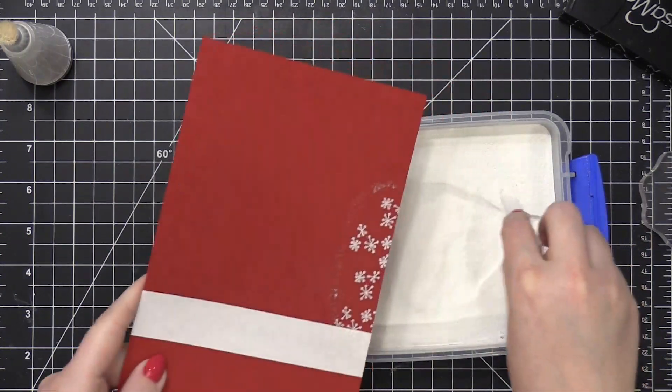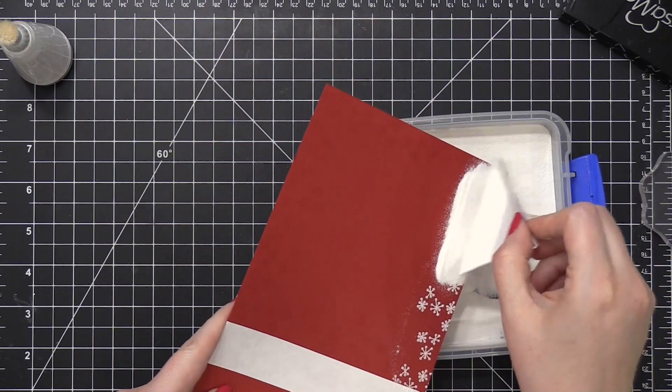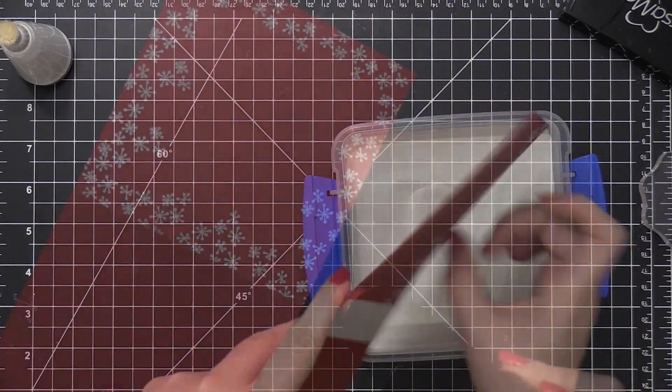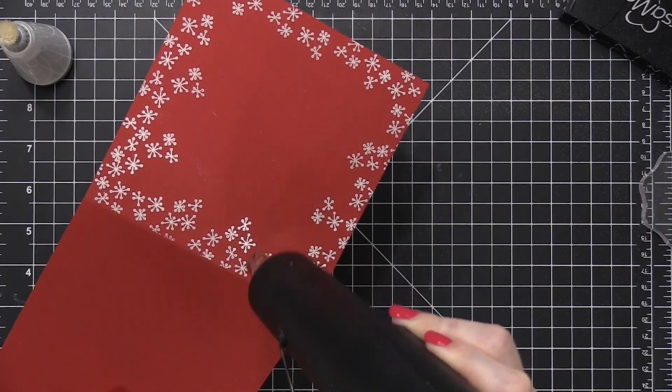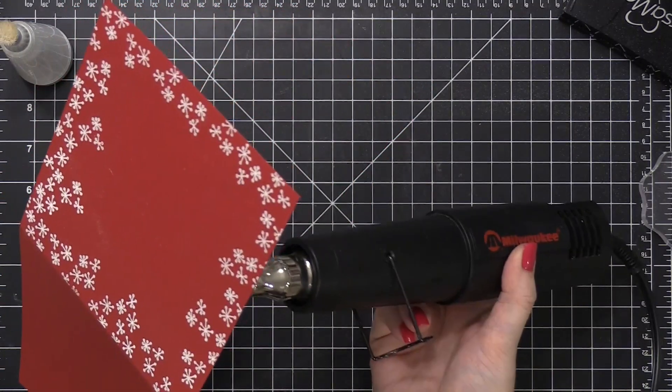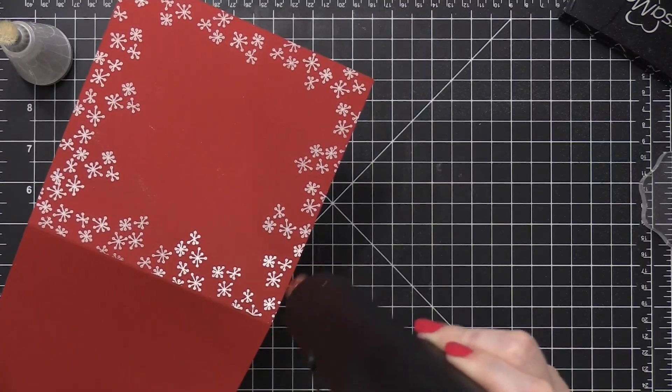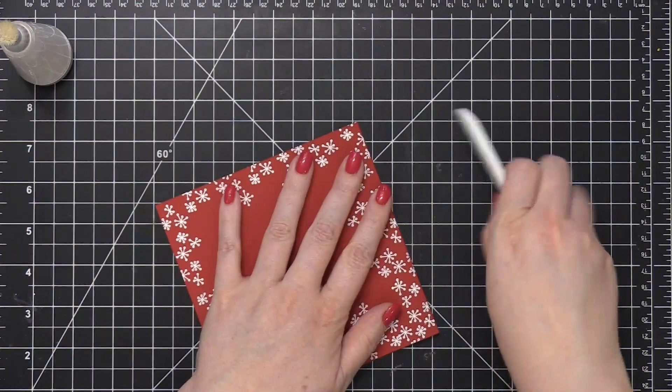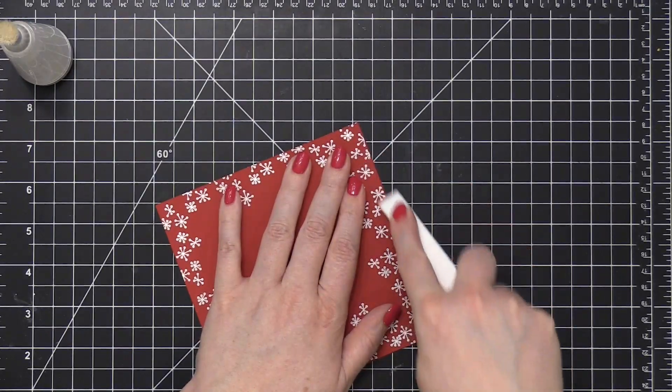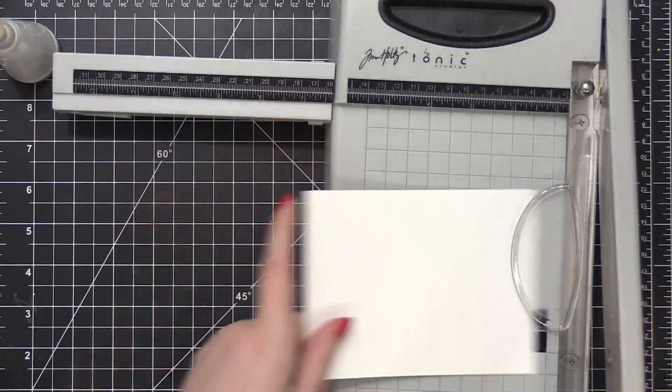So I used some more alabaster embossing powder from Brutus Monroe, tapped off the excess, and then used the heat tool to heat set this. Now, originally my plan was to just do the frame, and it would save me some time, but I kind of like how this looks. I think you could actually do this kind of frame and have it show that it's just the frame. I think it would look really cool, but I am still going to go ahead with my other plan.